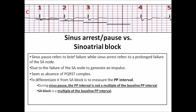Sinus pause or arrest versus sinoatrial block. Sinus pause refers to brief failure while sinus arrest refers to prolonged failure of the SA node. There is no universally accepted definition to differentiate the two. This is due to the failure of the SA node to generate an impulse. On the surface EKG, it is seen as an absence of P-QRST complex. To differentiate it from SA block, measure the PP interval. During sinus pause, the PP interval is not a multiple of the baseline PP interval, while SA block is a multiple of the baseline PP interval, particularly SA block type 2. In this strip, this is sinus bradycardia at around 57 beats per minute with a bundle branch block. The pause is not equal to the baseline PP interval, making sinoatrial block type 2 unlikely.